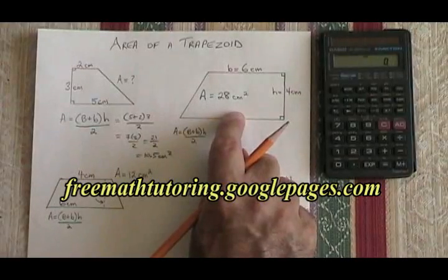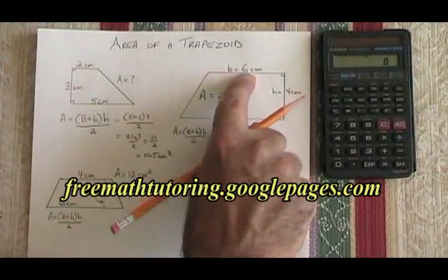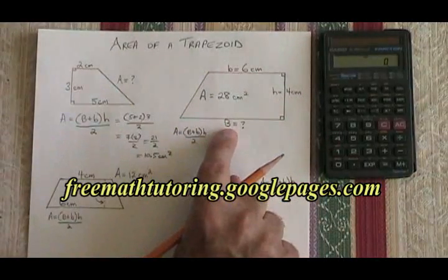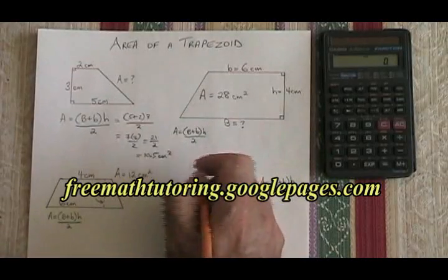In this second right trapezoid, we are given the area, and the little b and the h, we are being asked for the big B. So we fill in our formula like this.